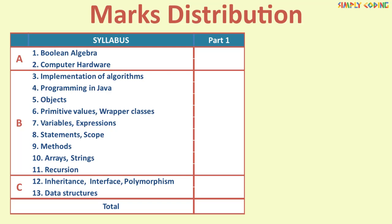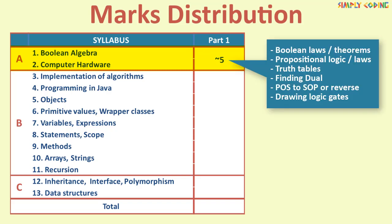Now let's take a look at approximately how these marks are distributed across these different chapters based upon previous year paper analysis. Let's start with part A which is compulsory section of 20 marks. Here 5 mark questions are from section A. These are typically 1 mark questions and almost 4 questions actually comes from Boolean algebra. The questions are around stating and verifying any Boolean laws, propositional logic and verifying it with truth table. Then the questions are also on finding the dual, pause to swap or reverse conversion or even drawing some logic gates.